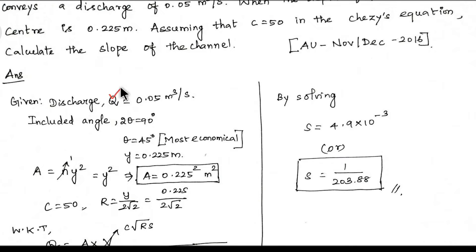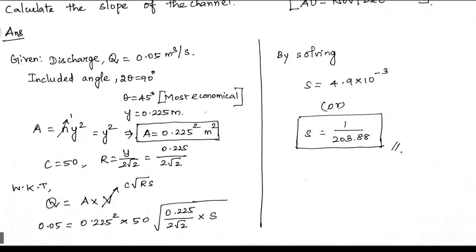Given data of Q, we will use the discharge equation. We will use the most economical condition. First, discharge Q equal to area into velocity. We will use the Chezy's constant. We will use the Chezy's equation: C into square root of RS.